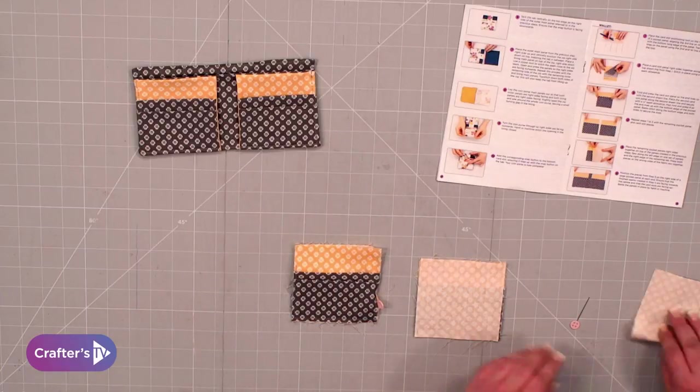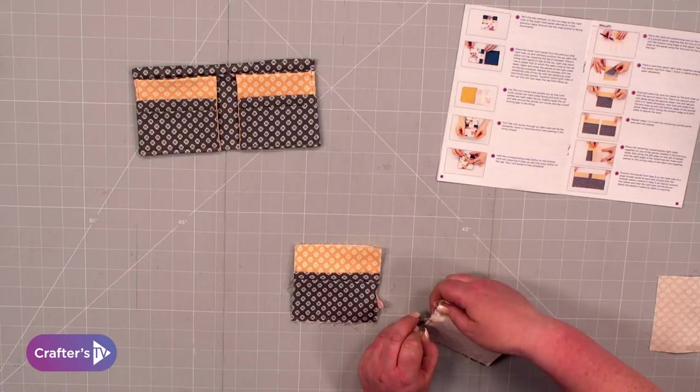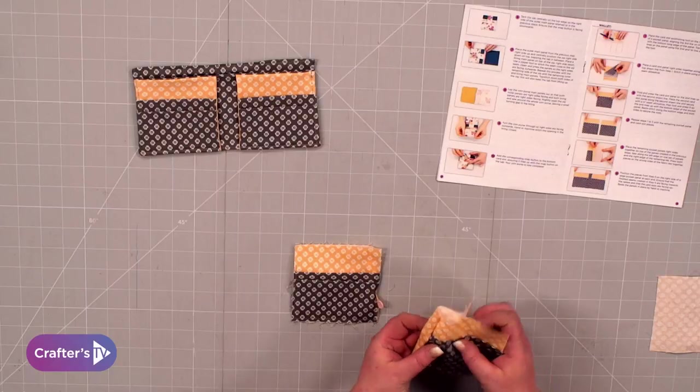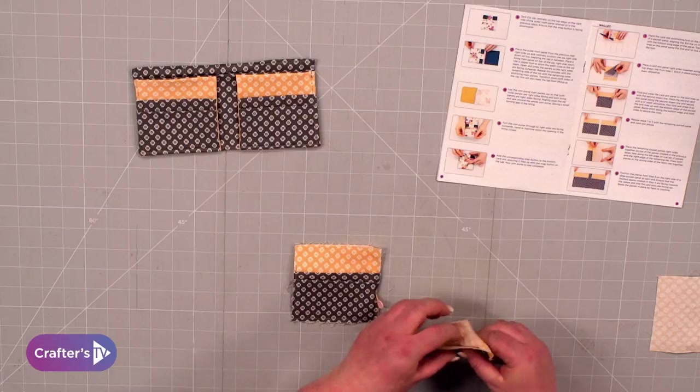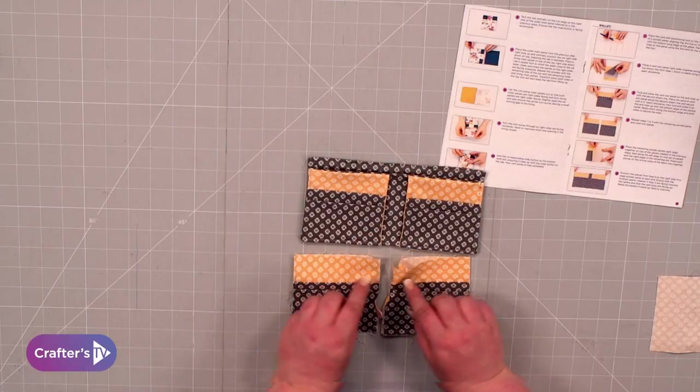When you've stitched it, that's going to go to the back like that. With this one, we're going to stitch the left hand side, and then that one's going to go to the back the other way. We've now mirrored that effect.